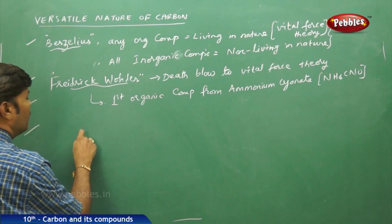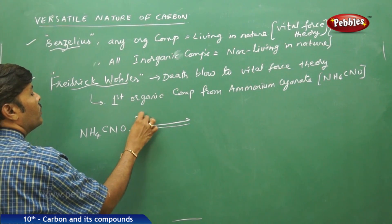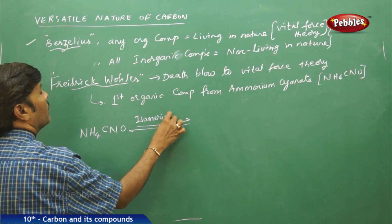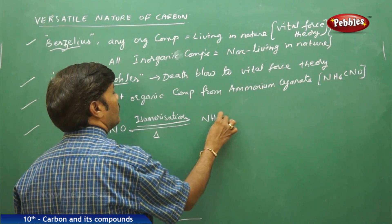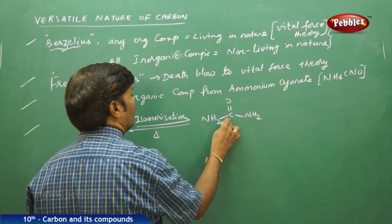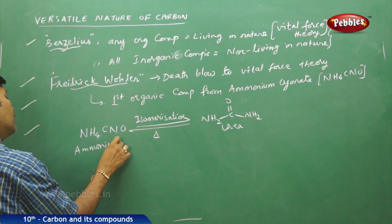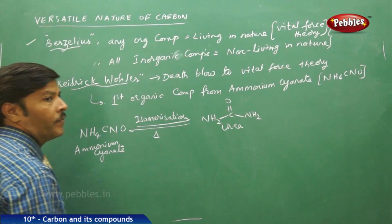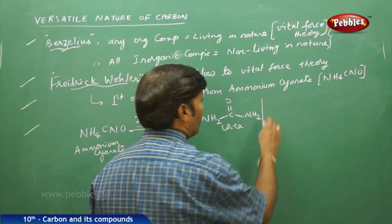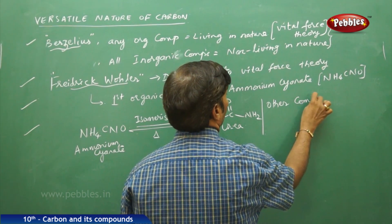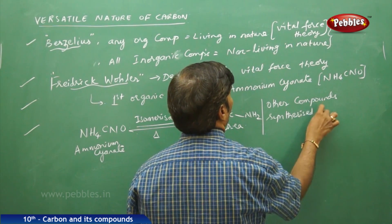According to Frederick Wohler, this ammonium cyanate when subjected to isomerization upon heating gave urea, that is NH2CONH2. Apart from urea, many other organic compounds were also synthesized in the laboratory.